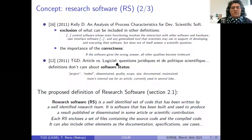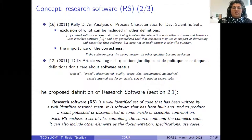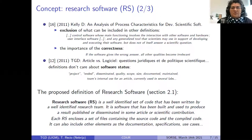Very important is the correctness of the software. If the software gives the wrong answer, all other qualities become irrelevant. No one speaks here about whether the software is well-documented, disseminated, or its quality, scope, or size. The important thing is the scientific work — the correctness of the scientific results.